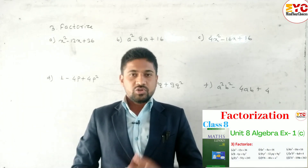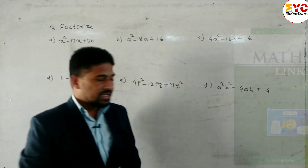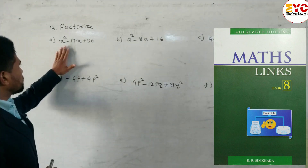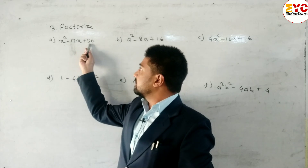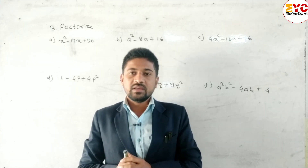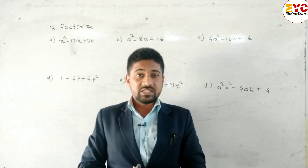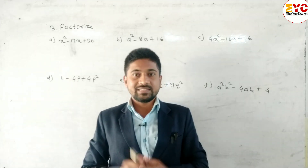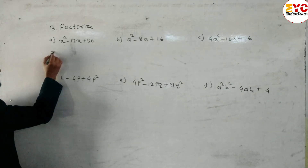Hello everyone. In my previous video I uploaded question number 2, which I took from exercise 1c math link book 8. Now for question number 3, I am going to factorize. I told you before: if we convert in the form of a whole square, we always use the formula a² - 2ab + b² = (a - b)², or a² + 2ab + b² = (a + b)².